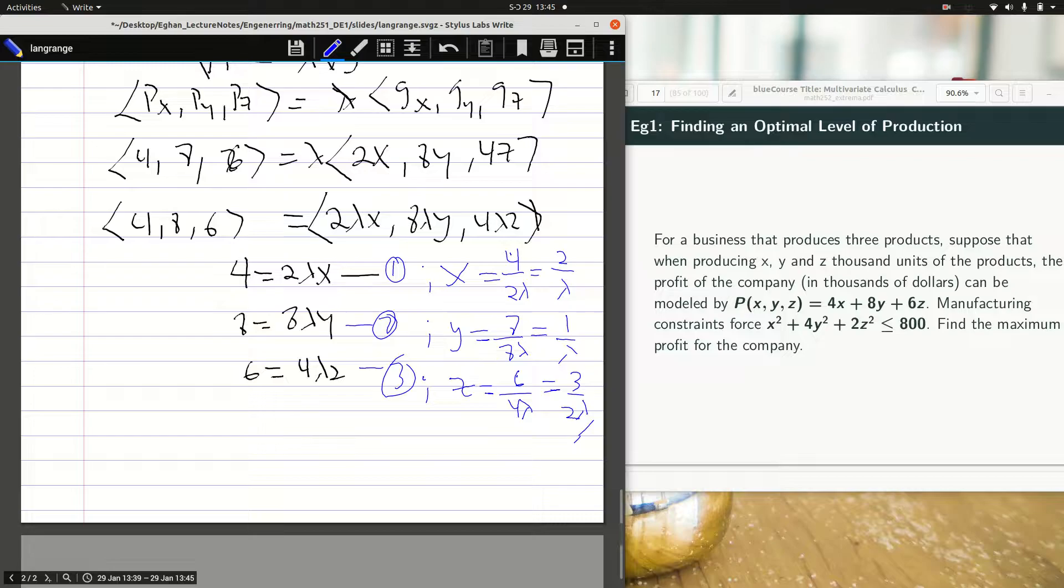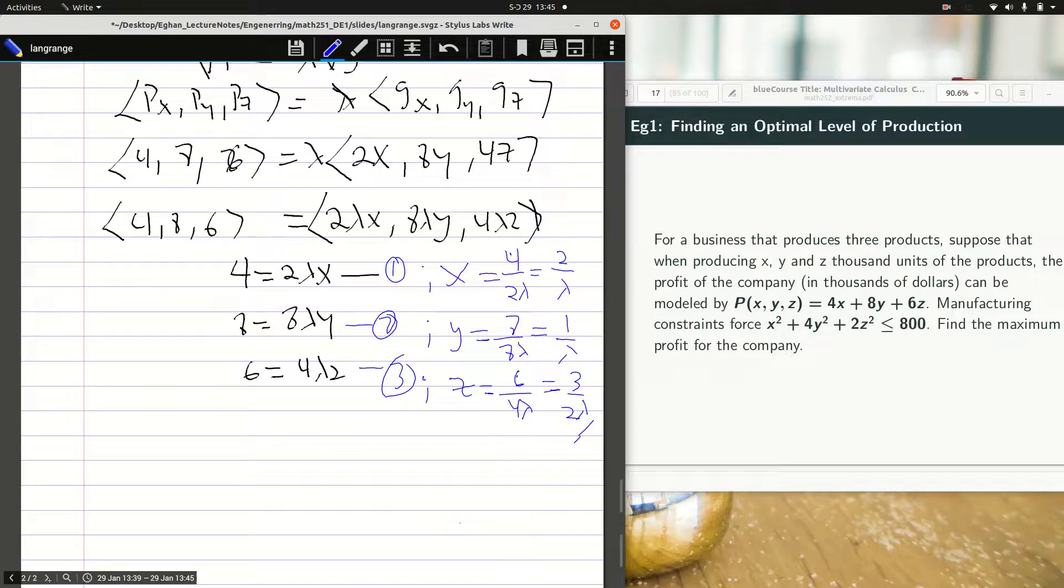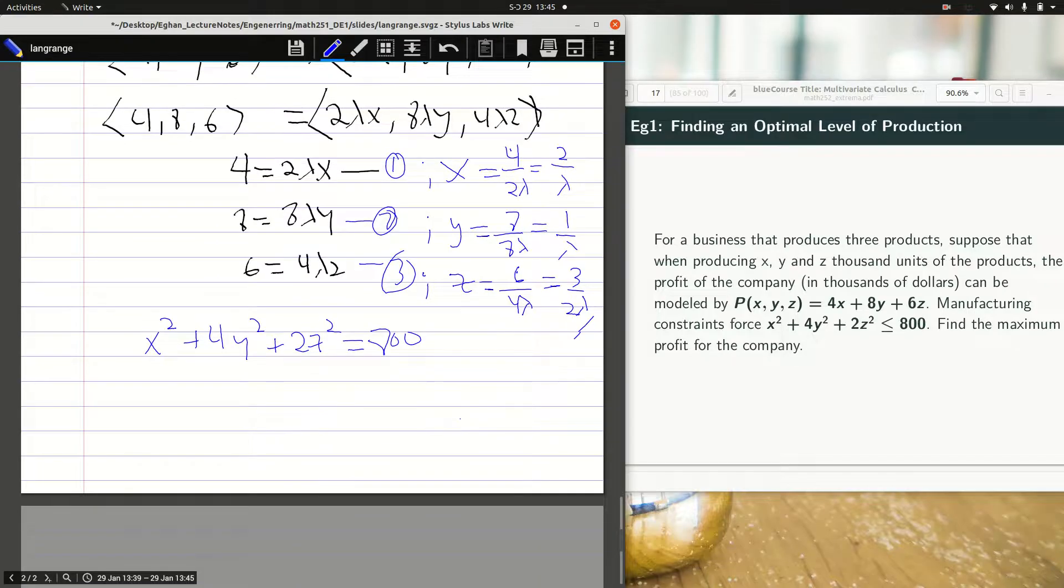Now is this the product we are looking for? They are given in terms of the multiplier lambda. That is what we must find. And to be able to find this, we must satisfy the constraint. So my XYZ must satisfy the constraint such that X squared plus 4Y squared plus 2Z squared is equal to 800. So let's do the substitution together.